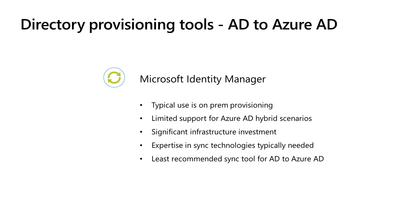We'll start with Microsoft Identity Manager, our longest-lived provisioning product, which was originally built to address on-premises needs. These include provisioning from an on-prem HR system to Active Directory, and from Active Directory to on-prem applications. Although it can provision objects to Azure AD using Microsoft Graph Connector, it is typically only recommended in very special cases. Unlike Azure AD Connect, MIM was not built for provisioning to Azure AD, and therefore it will continue to have limited support for hybrid scenarios. It typically requires a significant investment in infrastructure resources and, due to its complexity, often requires consultants that specialize in the MIM product.